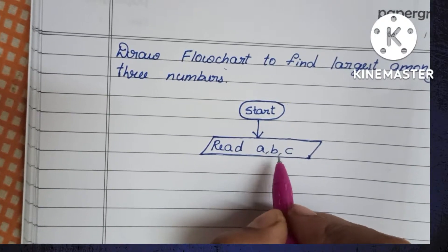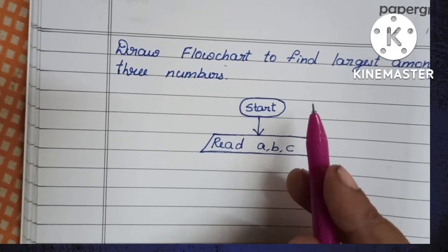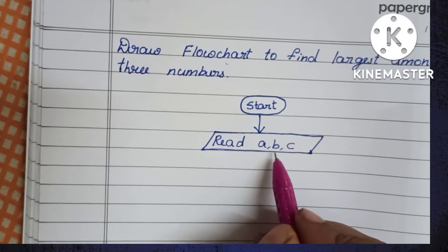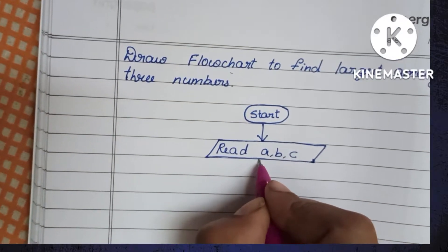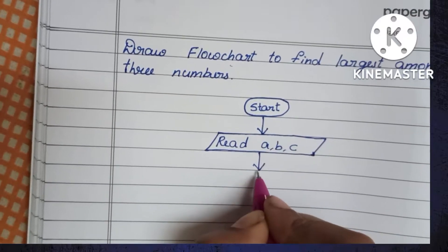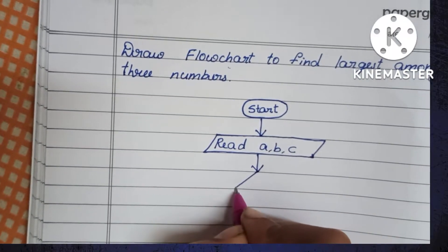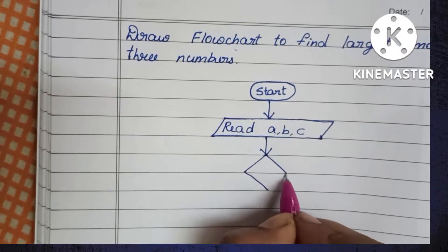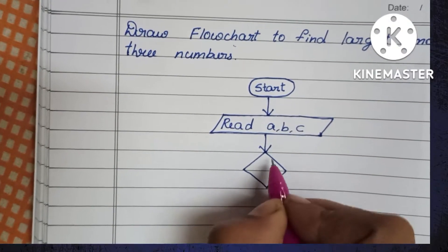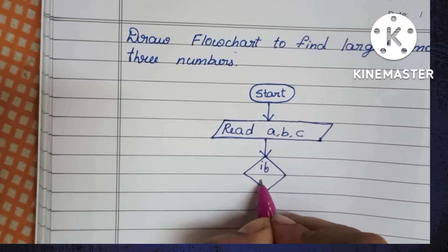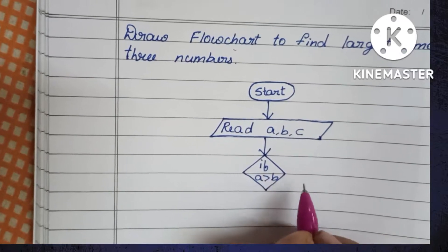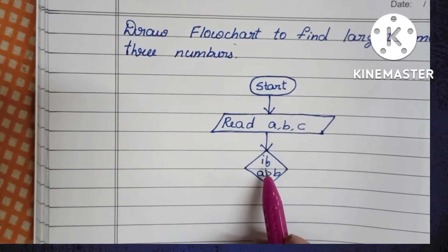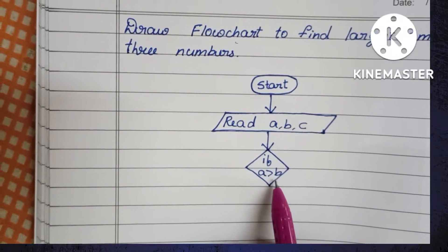Next, we have to start the process. First, we have to compare A and B. To find the largest among three numbers, we compare A and B to see which one is greater. This comparison is done within a diamond shape, so draw a diamond shape. If A is greater than B...